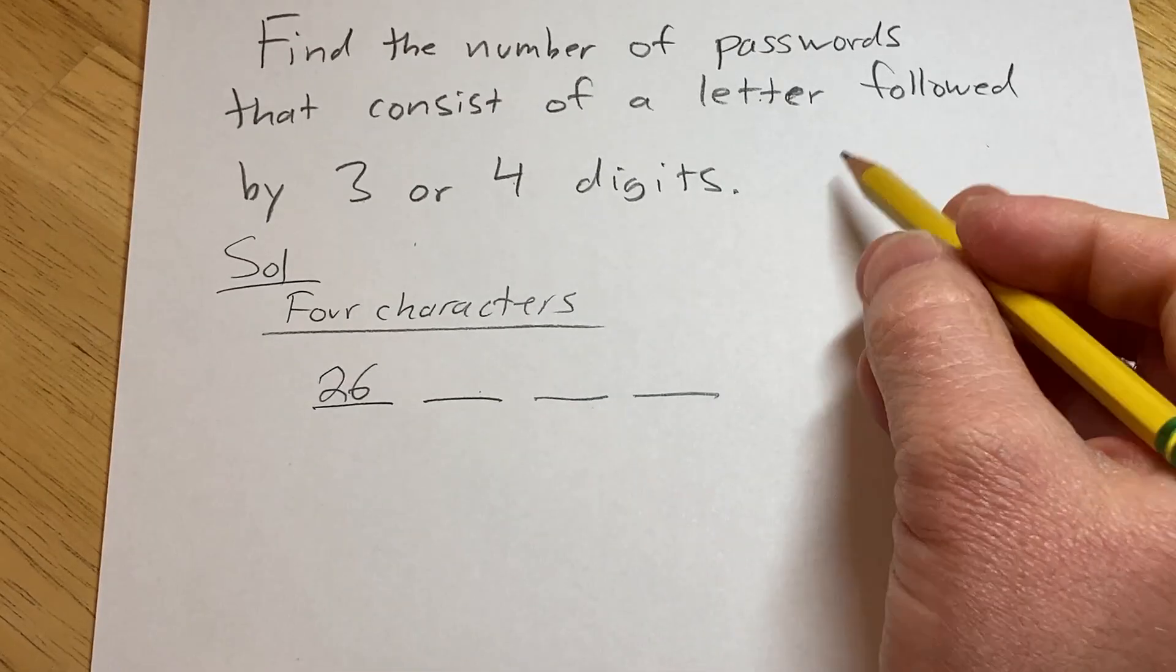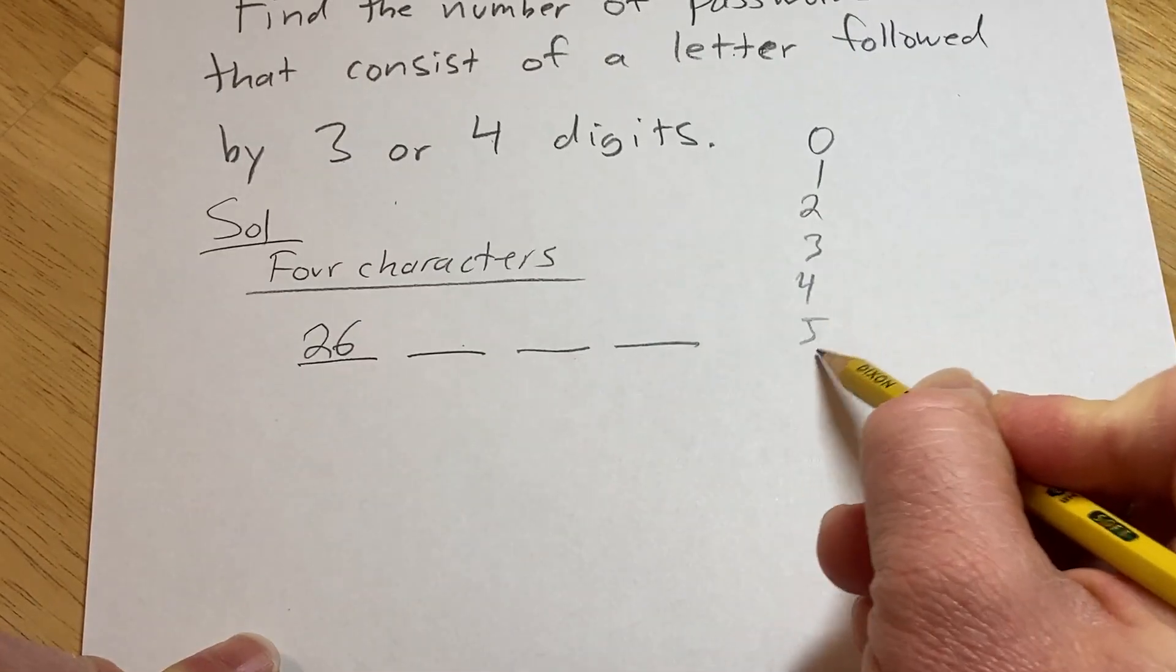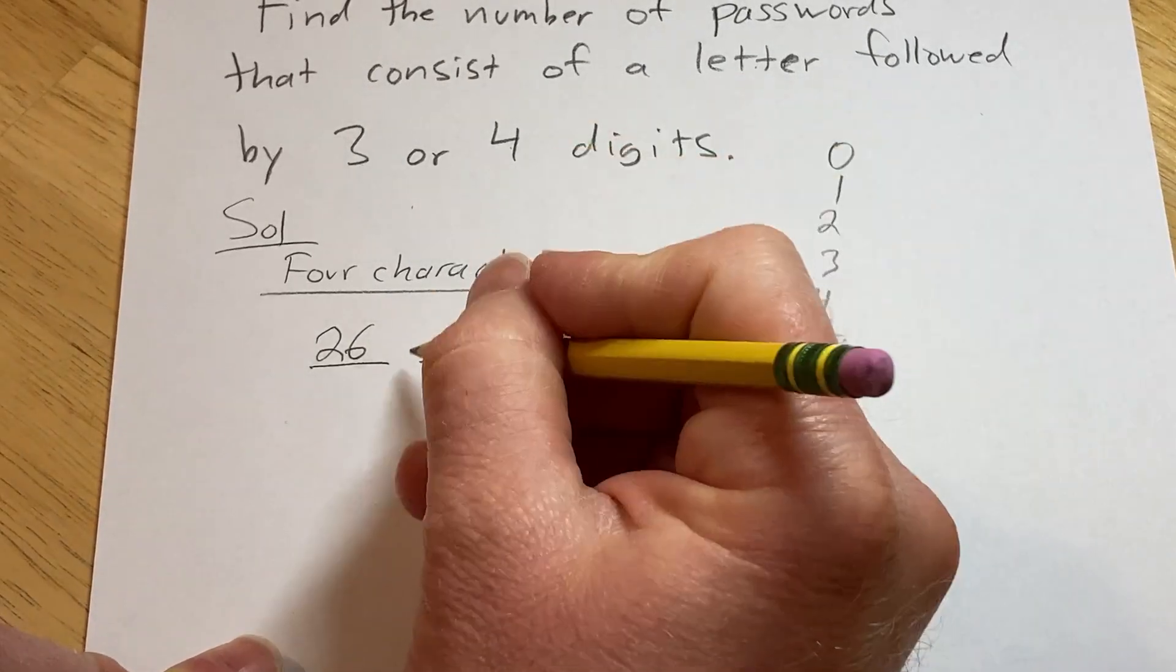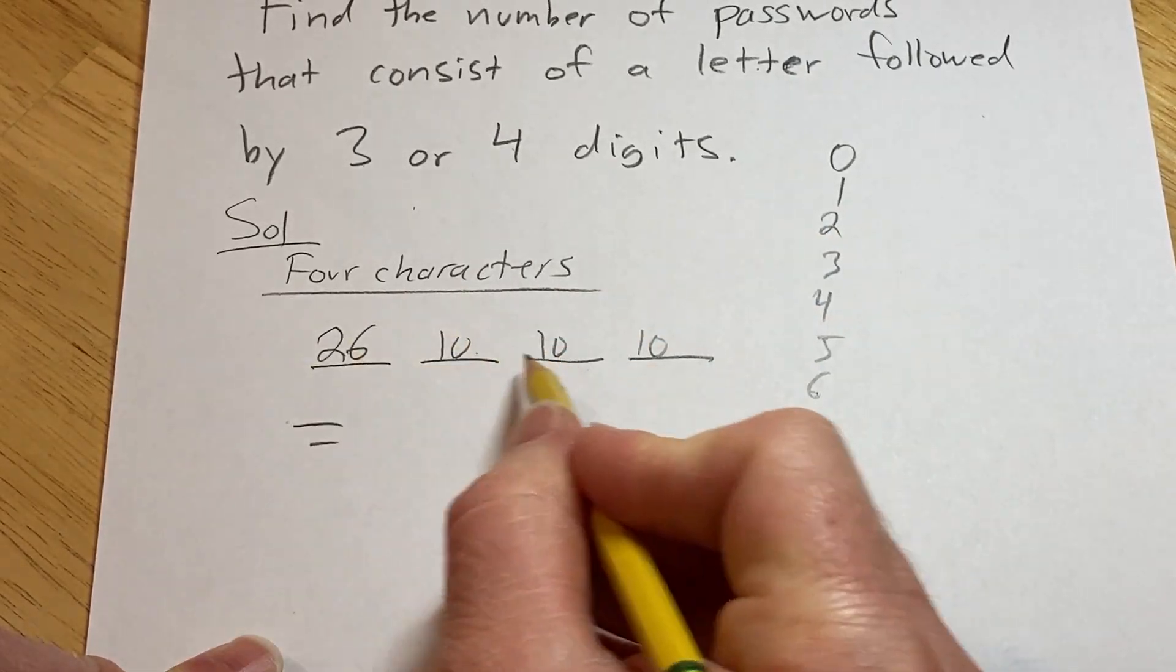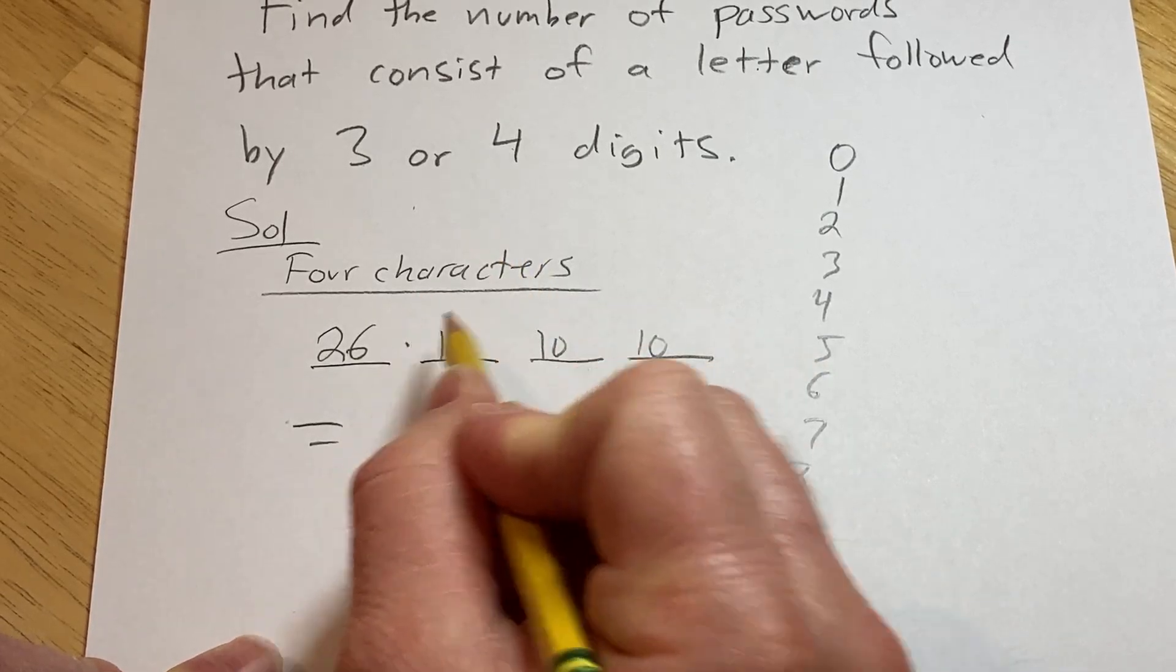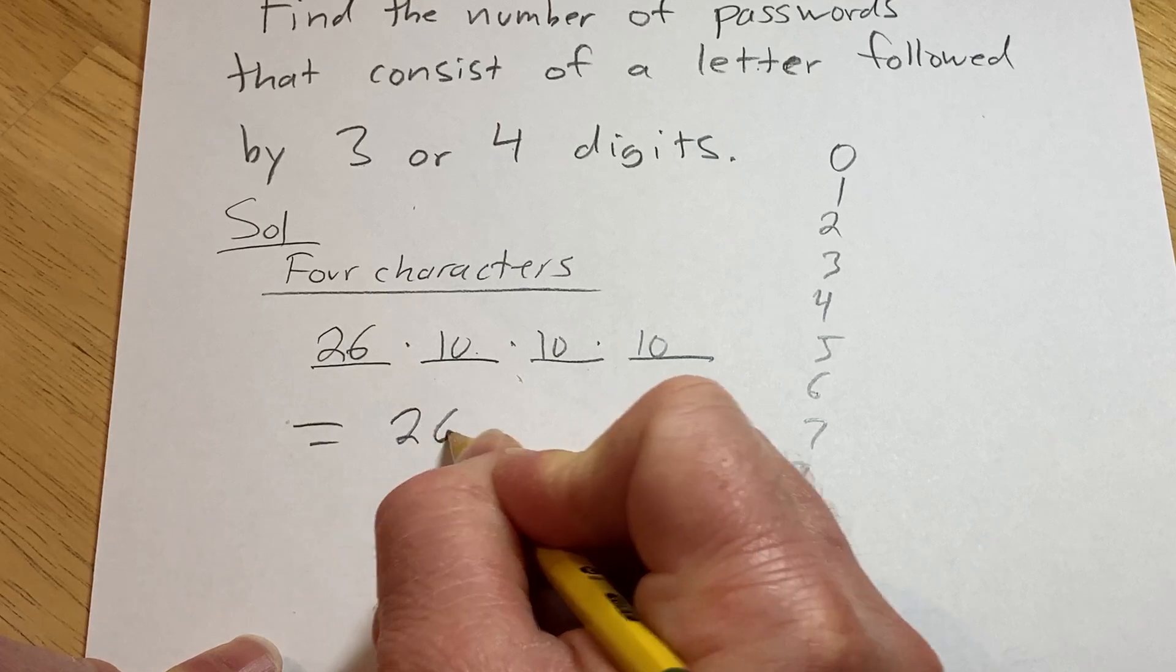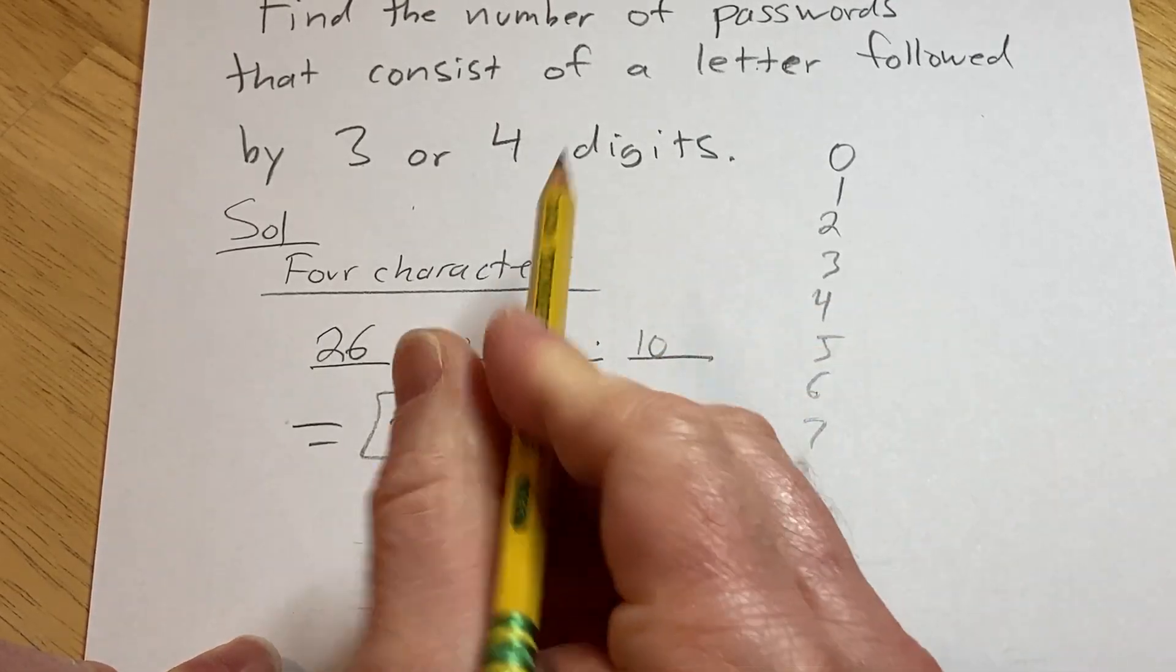And then we have three digits, and there are ten choices for each digit because the digits are zero through nine. So we have ten choices for each position. So the number of passwords is going to be the product. So it's going to be 26 times 10 times 10 times 10, which equals 26,000 possible passwords with four characters.